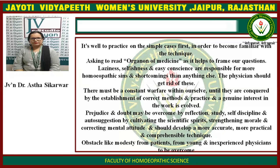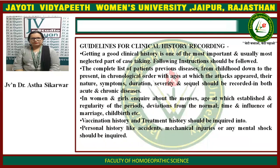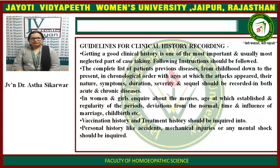Obstacles like modesty from patients or from young and inexperienced physicians are to be overcome. Guidelines for clinical history recording: getting a good clinical history is one of the most important and usually most neglected parts of case taking. The complete list of the patient's previous diseases from childhood down to the present in chronological order — with ages at which the attacks appeared, their nature, symptoms, duration, severity and sequels — should be recorded in both acute and chronic diseases. In women and girls, inquire about the menses, age at which established, regularity of periods, deviations from the normal, and the time and influence of marriage, childbirth, etc. Vaccination history and treatment history should also be inquired into.